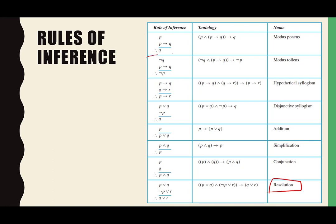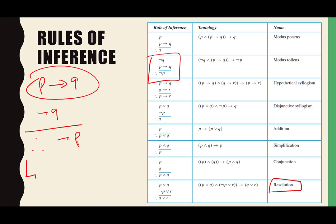Let's look at modus tollens: P therefore Q, and not-Q. How can we conclude not-P? Consider the contrapositive of P therefore Q, which is not-Q therefore not-P. We know that not-Q is true, and since the whole conditional is true and the hypothesis is true, the conclusion must be true. So we can conclude not-P.